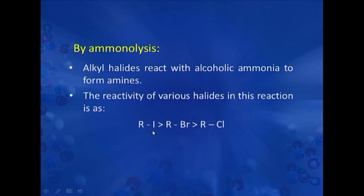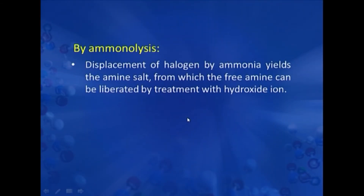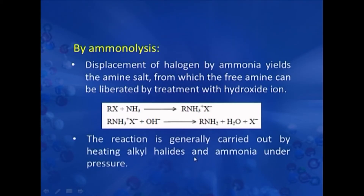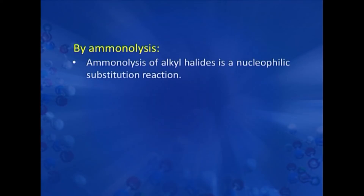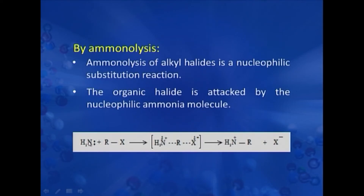Another method for the preparation of amines is via ammonolysis of alkyl halides. Alkyl halides react with alcoholic ammonia to form amines. The reactivity order is: alkyl iodides react fastest, then alkyl bromides, then alkyl chlorides. The reaction is generally carried out by heating alkyl halide with ammonia under pressure. Displacement of halogen by ammonia yields an amine salt, from which the free amine can be liberated by treatment with hydroxide ion, as seen when alkyl ammonium halide is treated with sodium hydroxide.